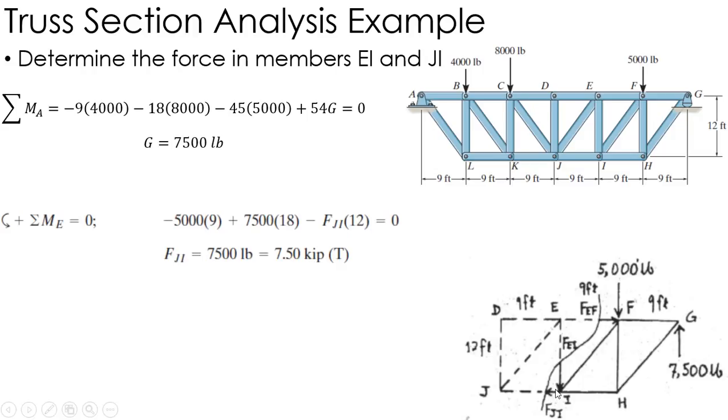My assumption that JI was in tension is correct. Now that I have that, I can sum the forces in the y direction to find FEI: 7500 minus 5000 minus FEI equals zero.